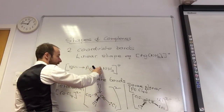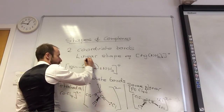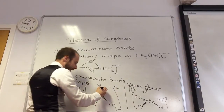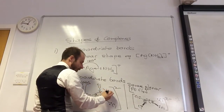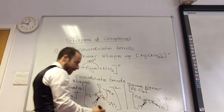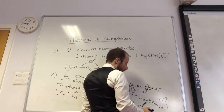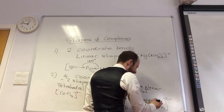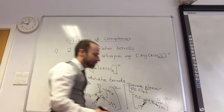Bond angle for linear is going to be 180°. Bond angle for tetrahedral is 109.5°. And bond angle for square planar is 90 degrees.